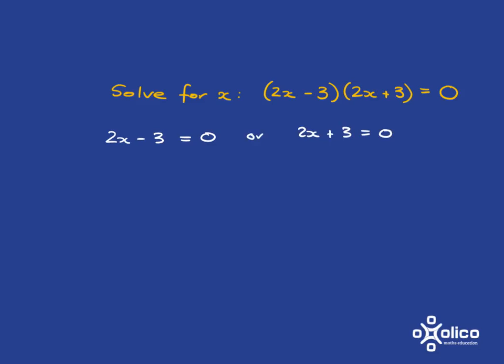And then solving this, how easy is that? Quickly do this one. You should have got 2x is 3 and then x is 3/2. And on this side it will follow a very similar pattern, except first you get 2x is negative 3 and then x is negative 3/2.